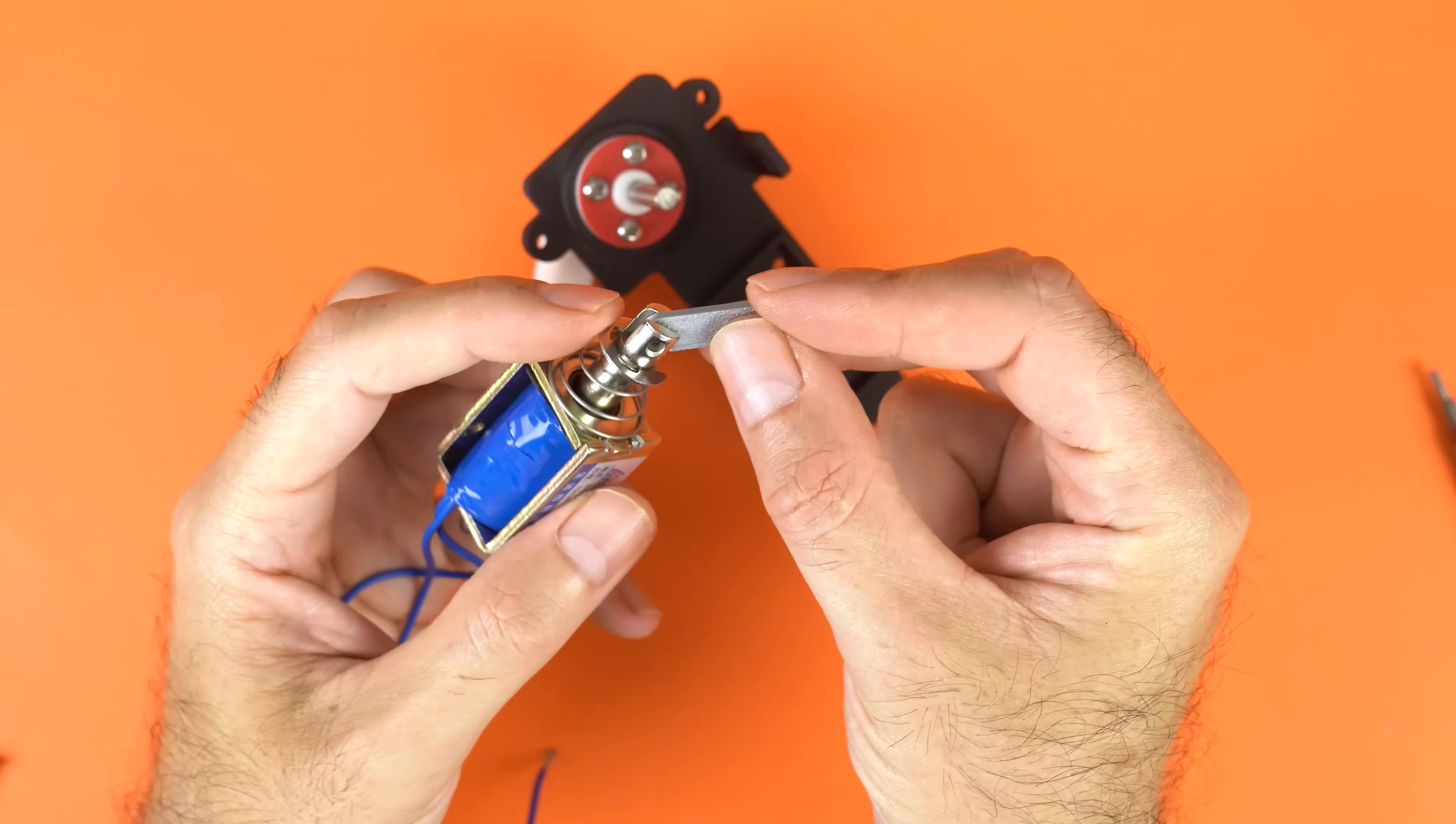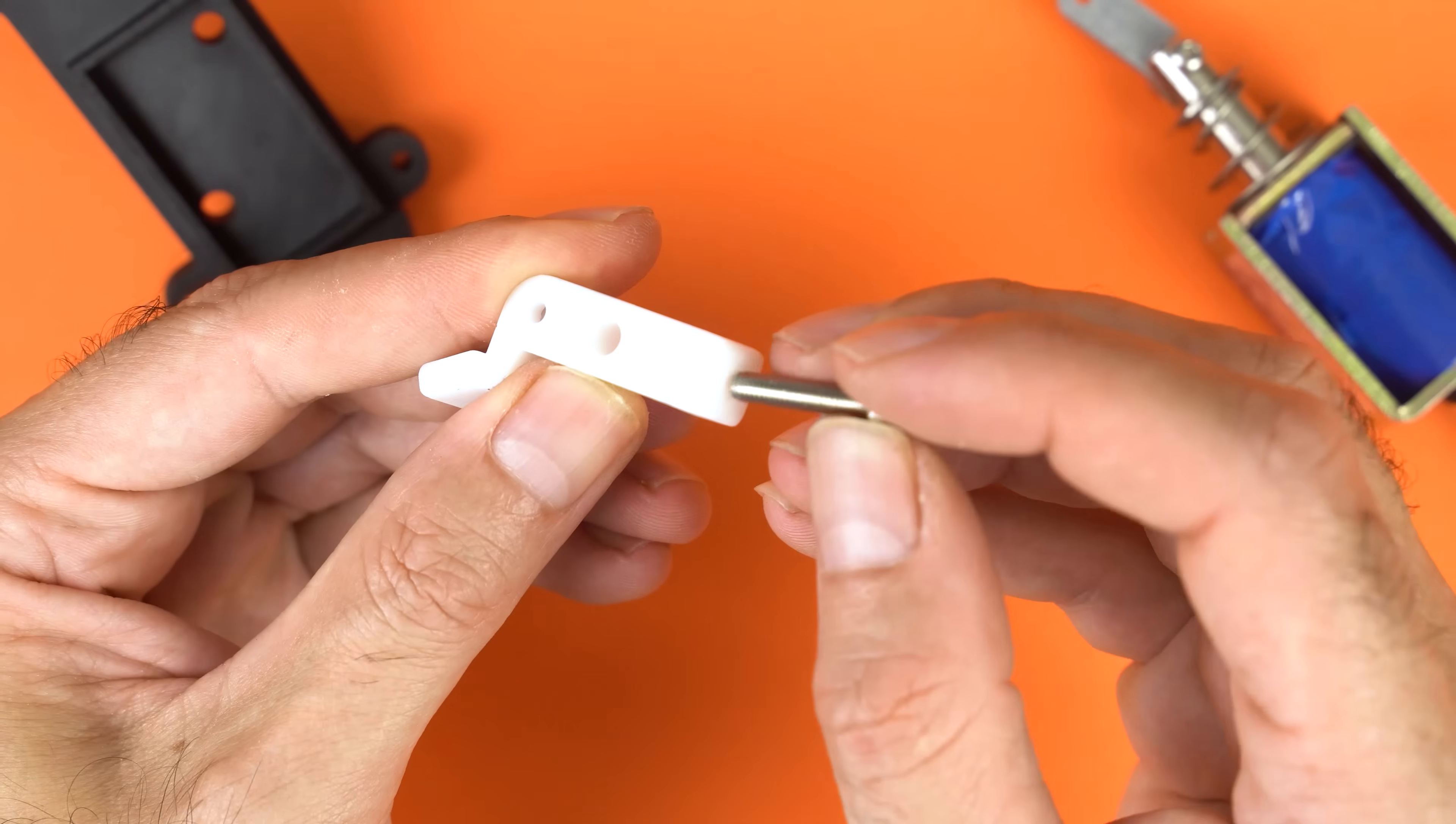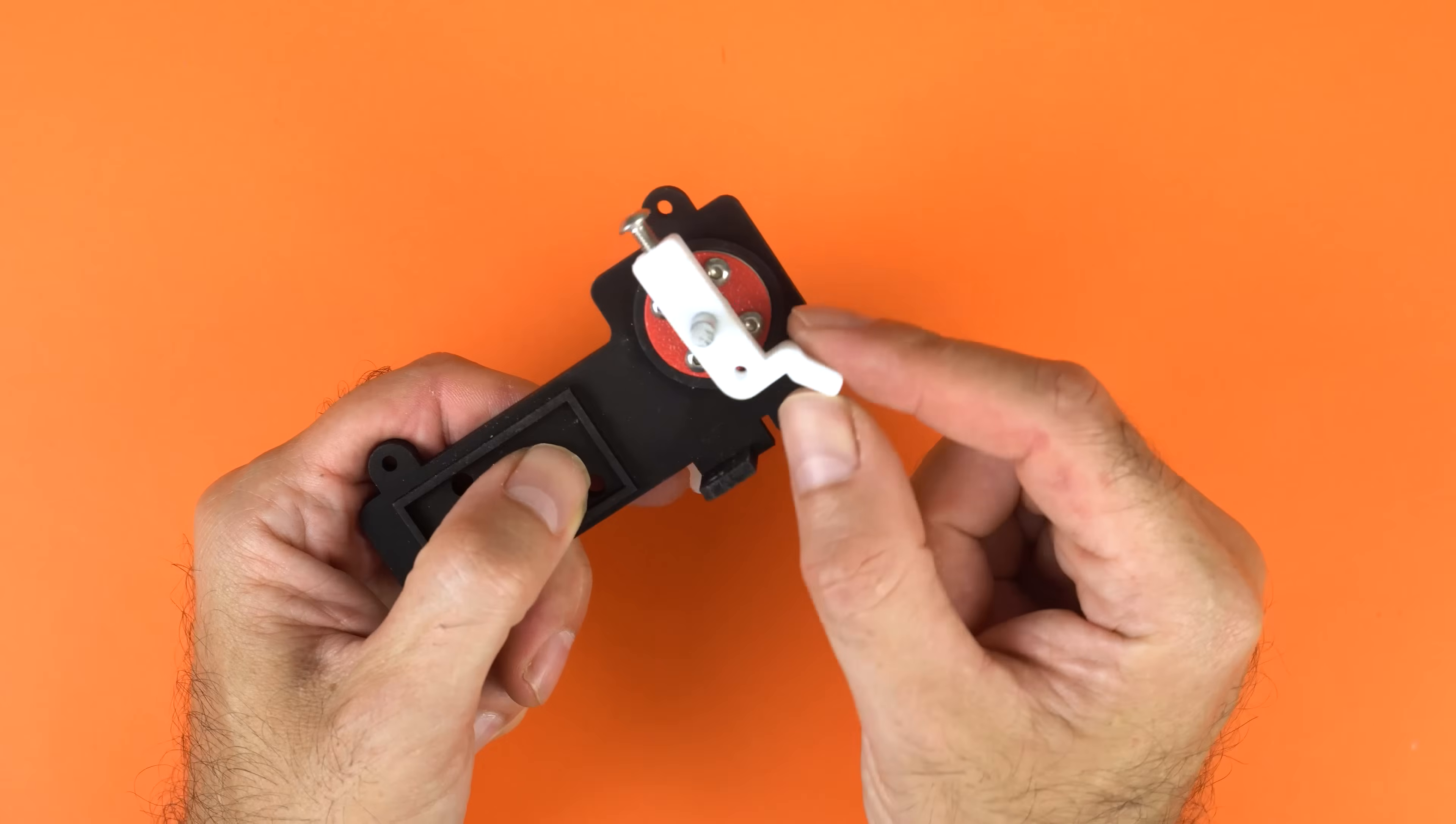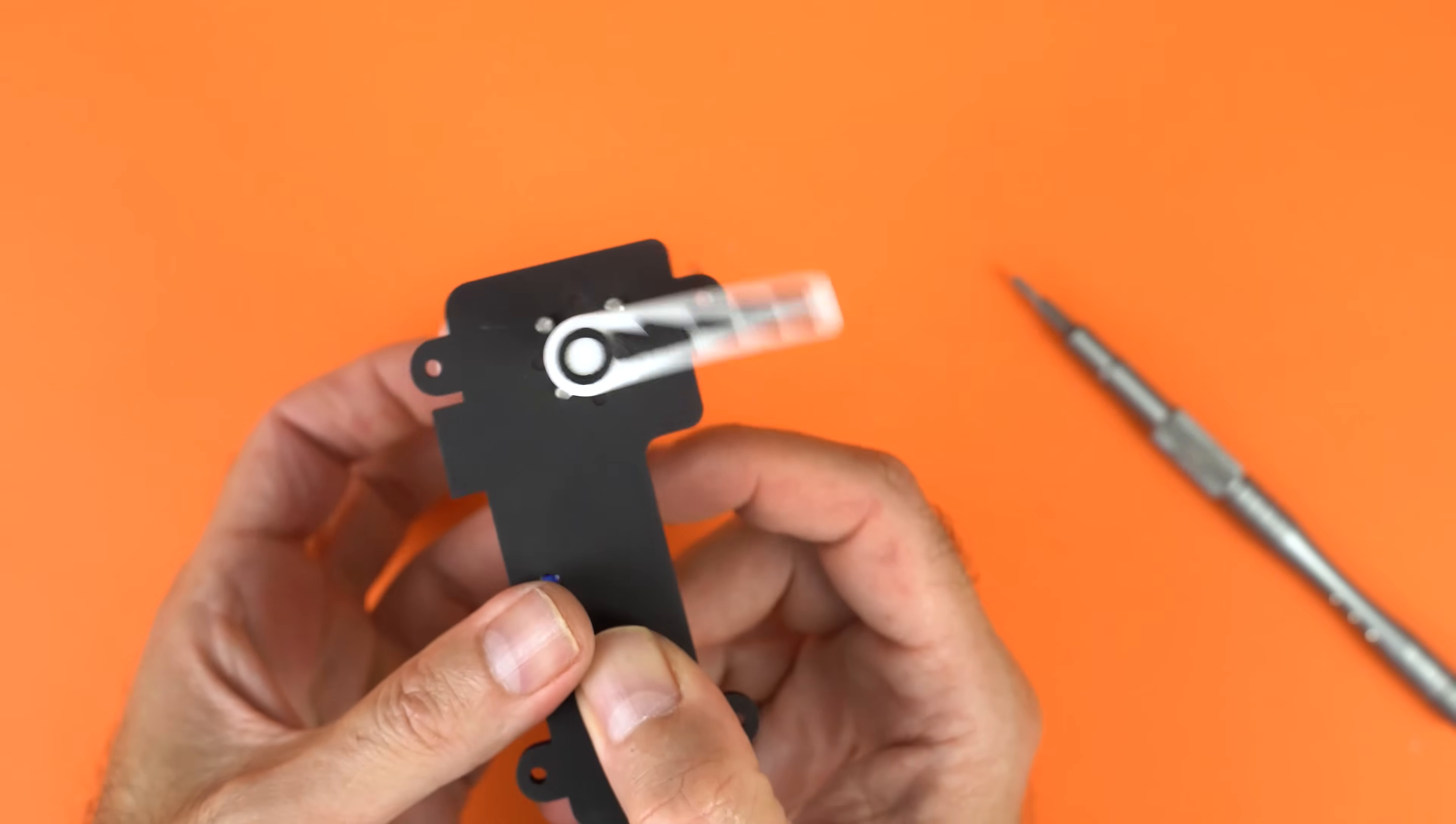We start with the base, where I insert the bushing. This decorative ring hides the surface marks from machining. I secure both bushing and ring with four small screws. Now I insert the flipper bat. It's very important that there's no play, and that it moves smoothly. Time to mount the coil. First, I attach the connecting plate with a 3mm screw and lock nut. It will then connect to the lever arm.